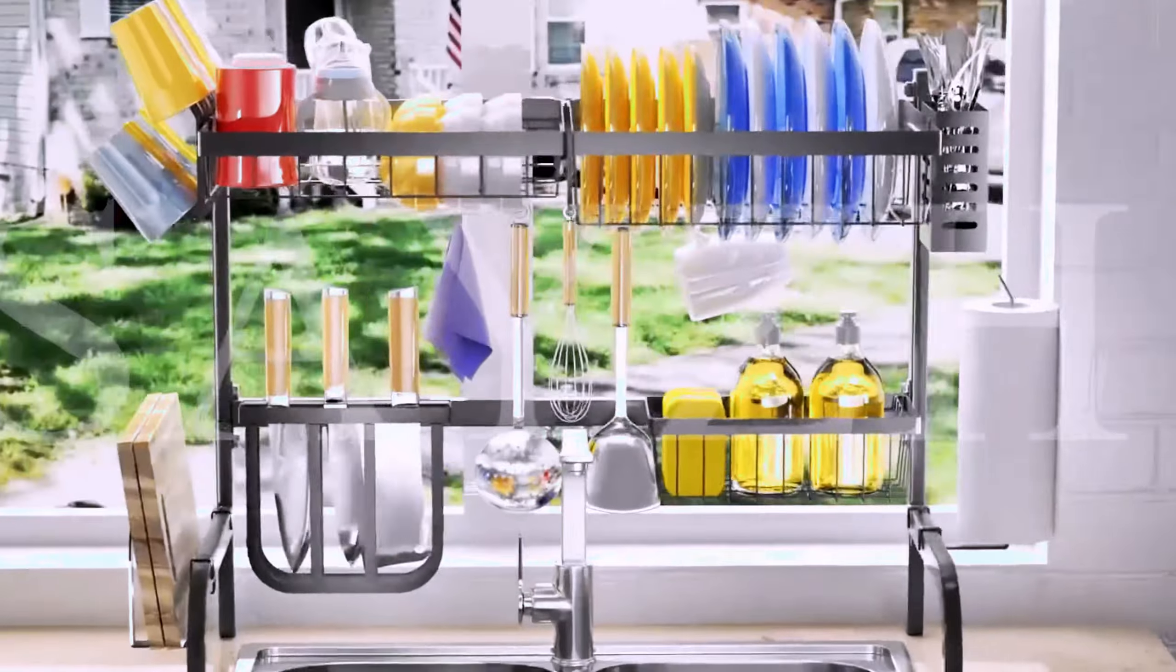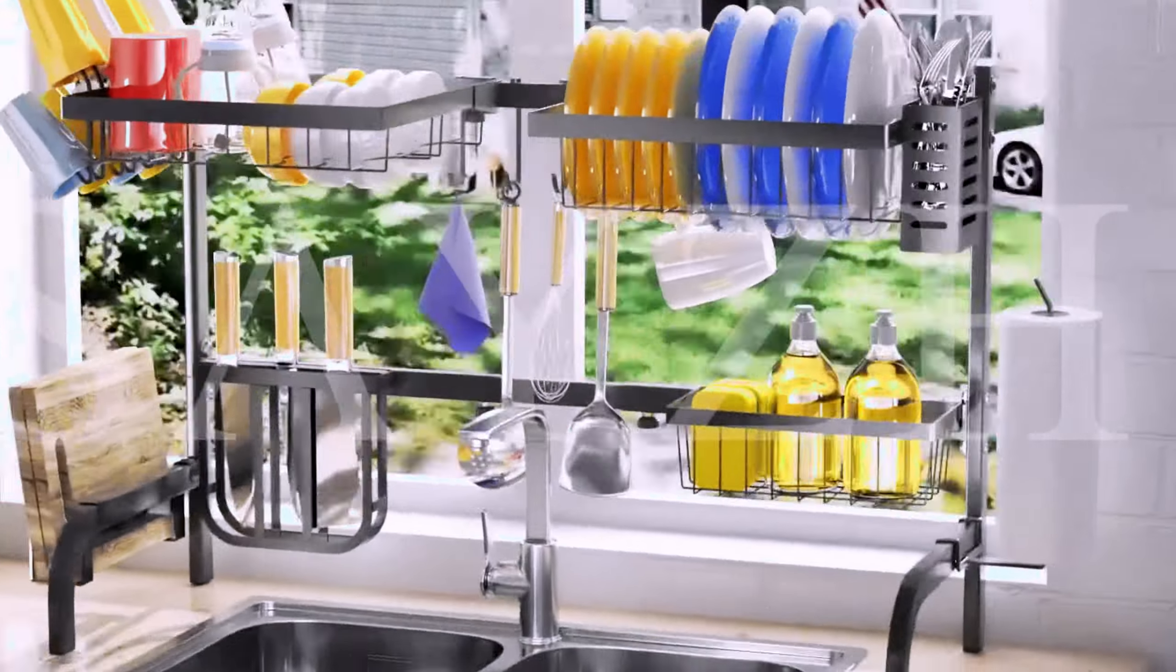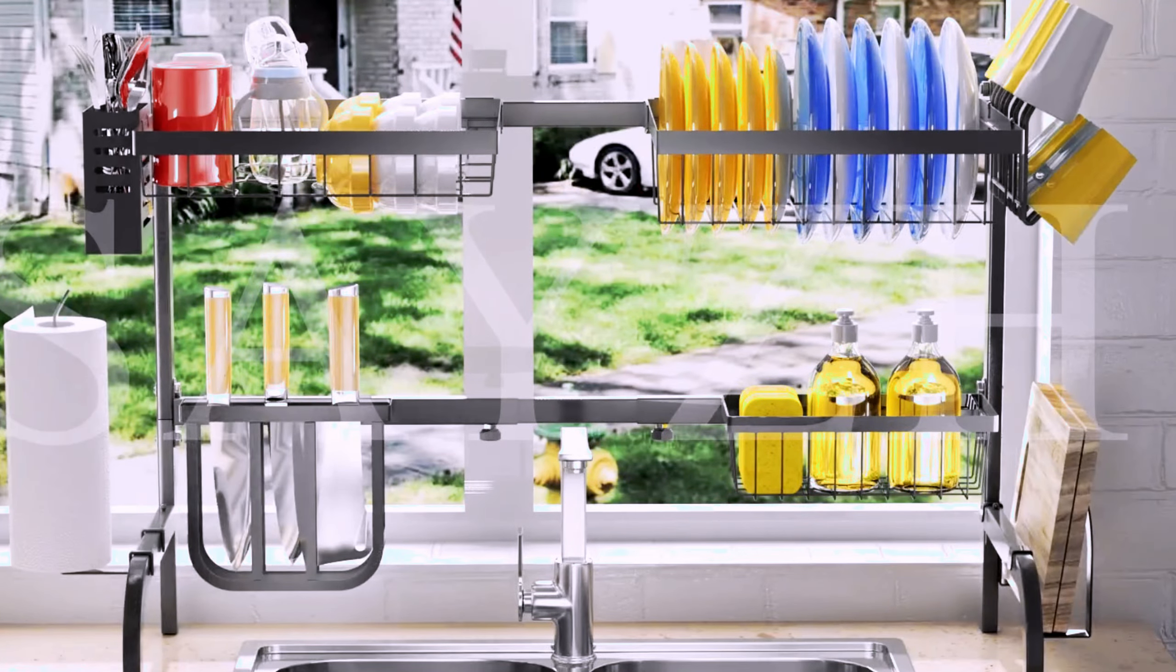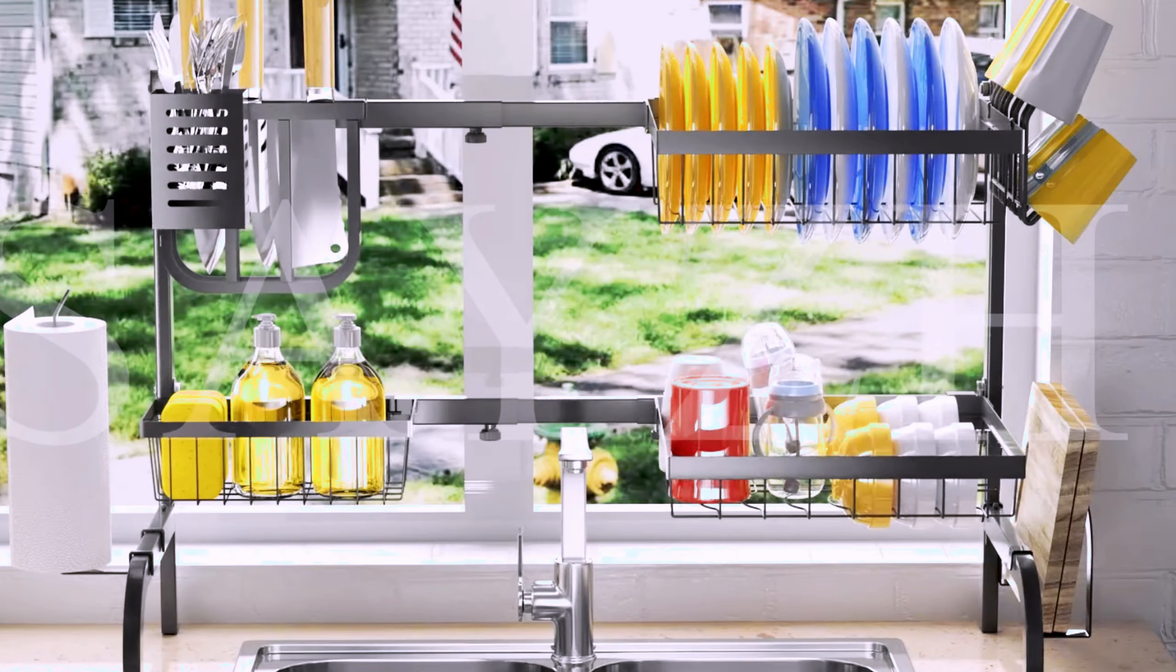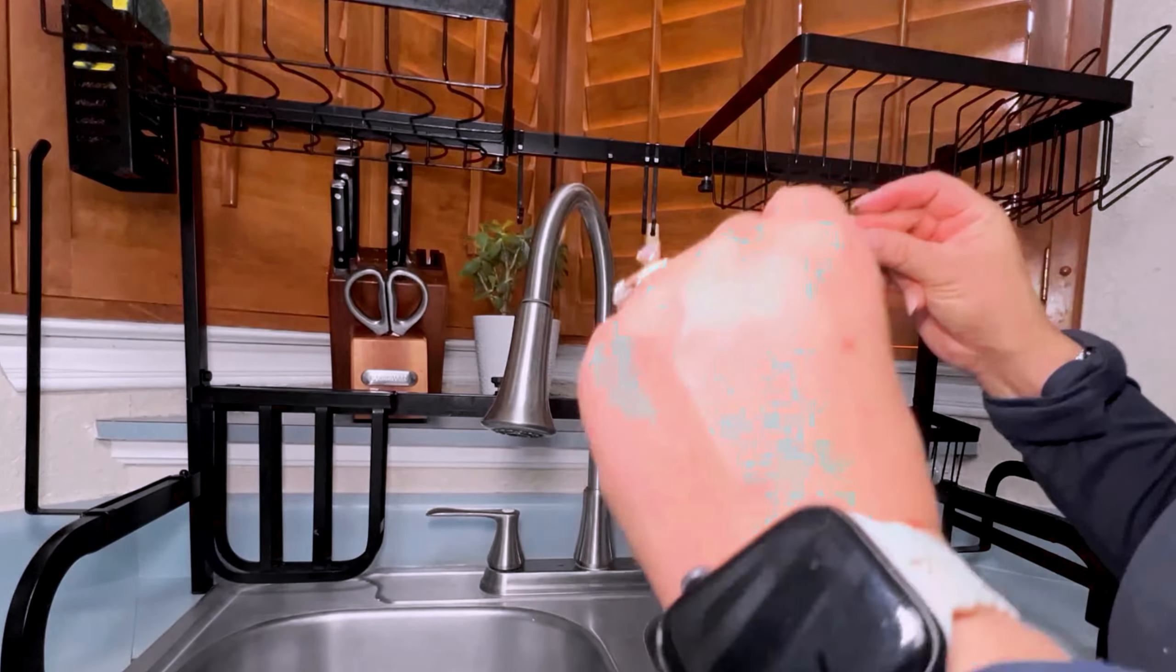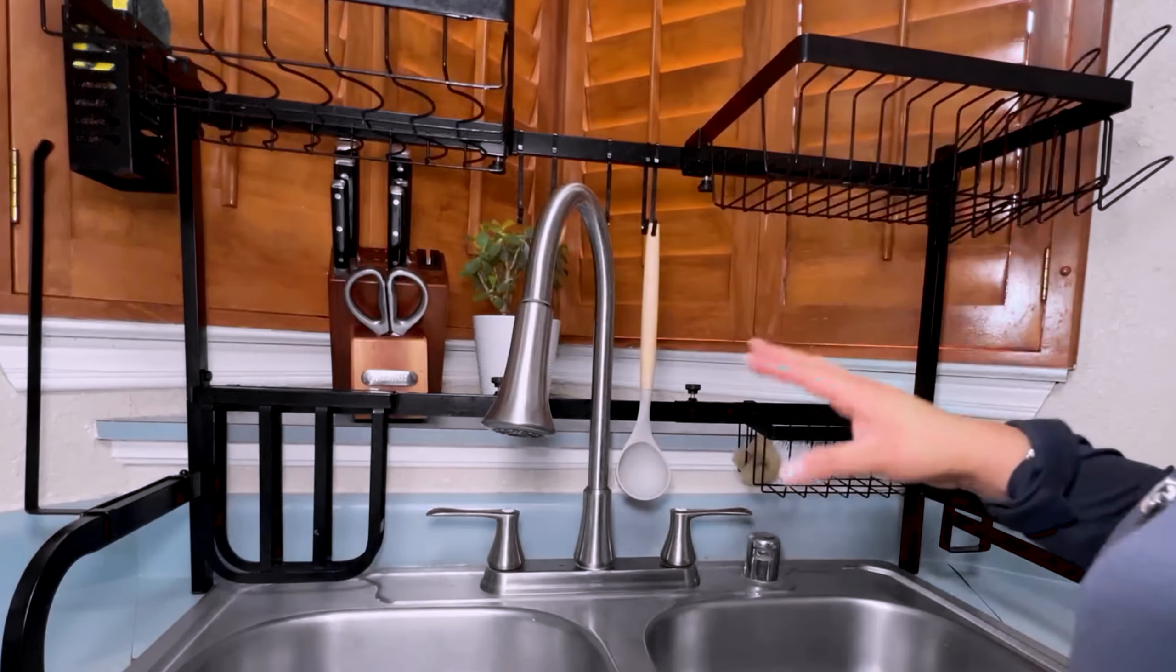The Sink Dish Drying Rack by Sage is a versatile and practical addition to any kitchen. Made of durable metal, this two-tier dish drying rack is not only sturdy but also adjustable, allowing you to customize it to fit your space perfectly.